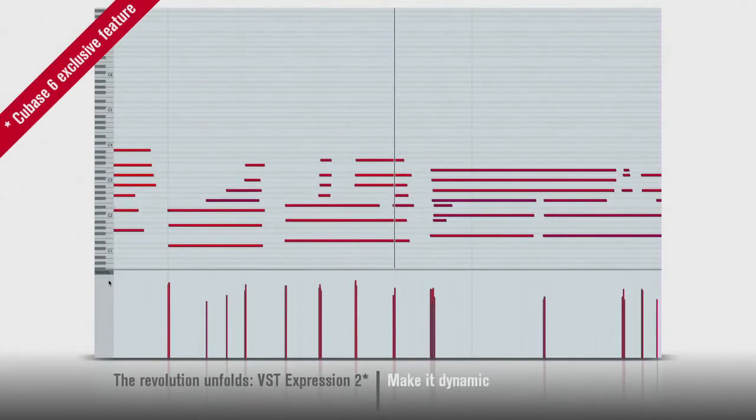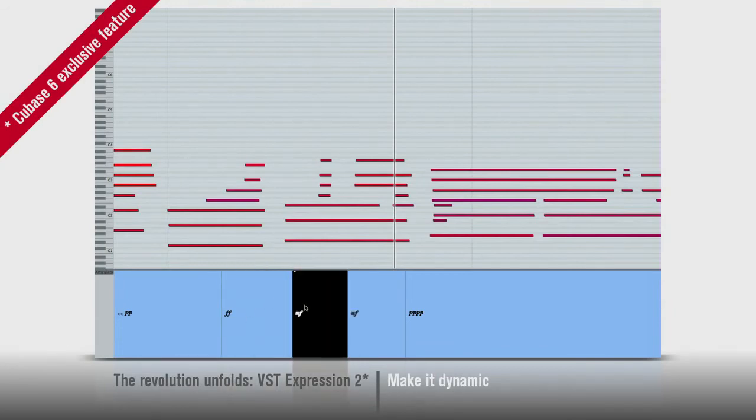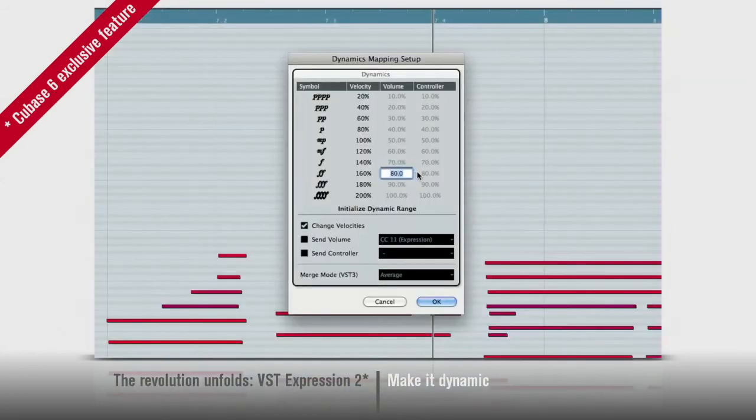Speaking of controller lanes, Cubase 6 now allows you to add dynamics and articulations right in the key editor. And these will translate directly into the scoring functions of Cubase. Take a few moments to set up your dynamics mapping, and your VST instruments will follow right along.